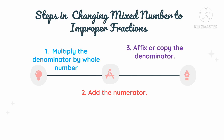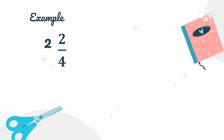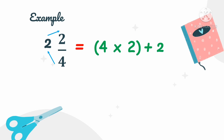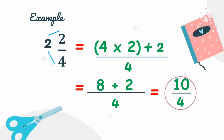Let's have an example. We will change 2 and 2 over 4 to an improper fraction. First step: multiply the denominator and the whole number — 4 times 2. Then add the numerator plus 2, and copy the denominator. Simplifying: 4 times 2 is 8, plus 2 is 10, and we copy the denominator 4. Therefore, 2 and 2 over 4 when changed to an improper fraction becomes 10 over 4.